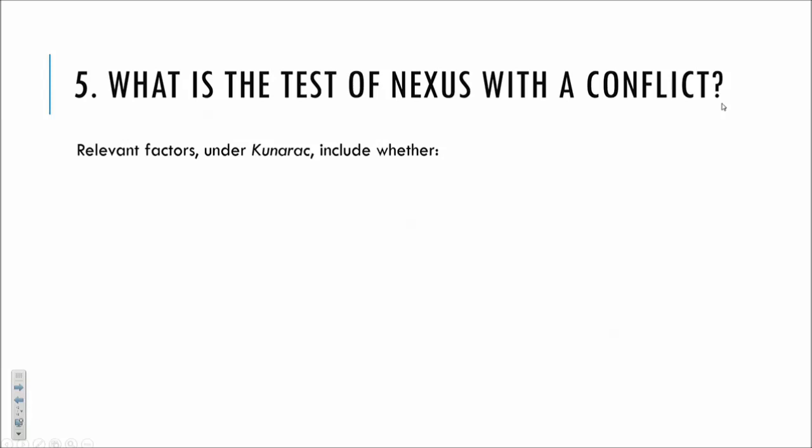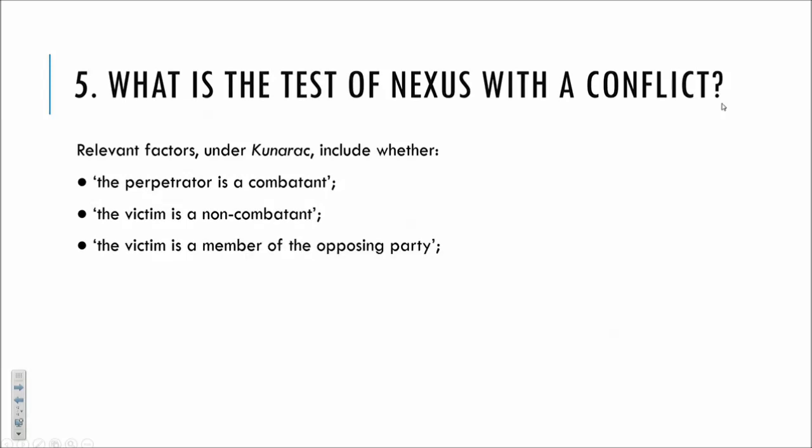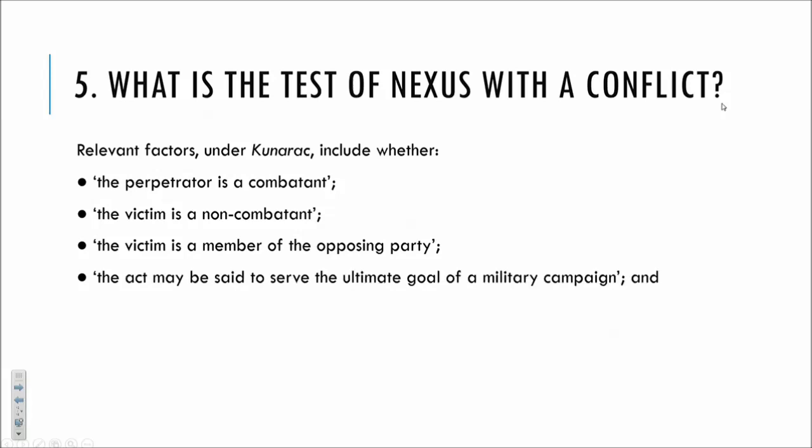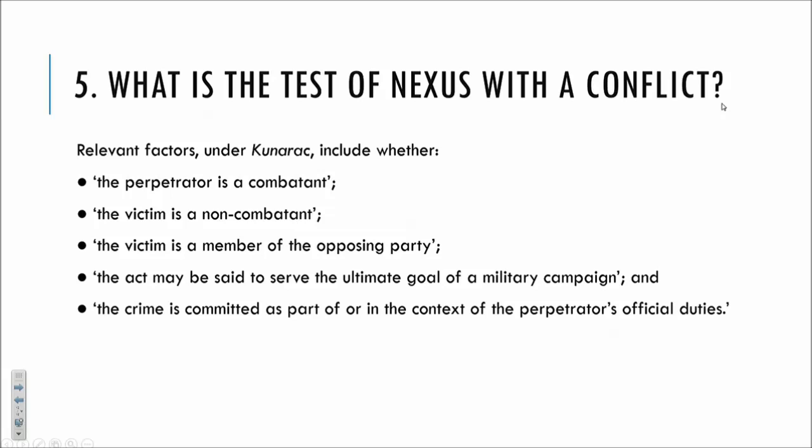There are a number of relevant factors that help us tease out when a crime has a link with a conflict: it would help if the perpetrator is a combatant; it would help if the victim is a non-combatant or a member of the opposing party; if the act might be said to serve the ultimate goal of a military campaign; and particularly if the crime is committed as part of or in the context of the perpetrator's official duties. A prison camp guard who murders, tortures, or subjects POWs to cruel, unusual, and degrading treatment would plainly be doing so in the context of and in furtherance of an armed conflict — the only reason they're in a position to do it is through abusing their power and responsibility.